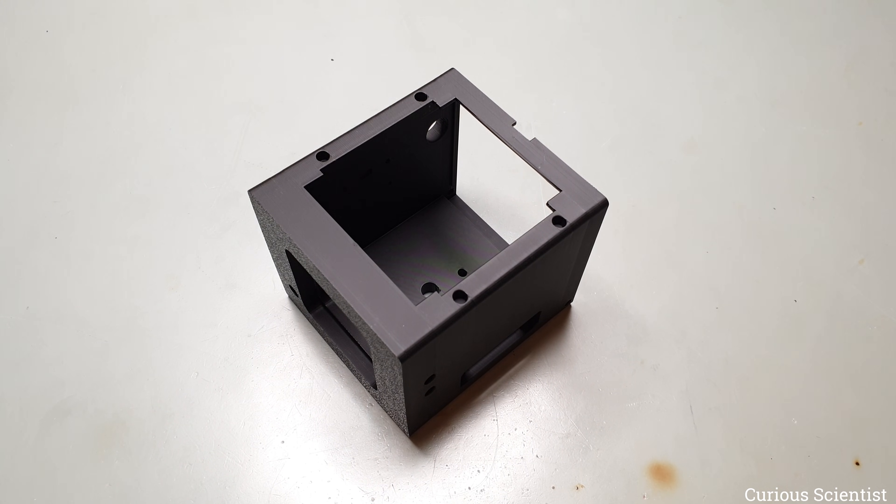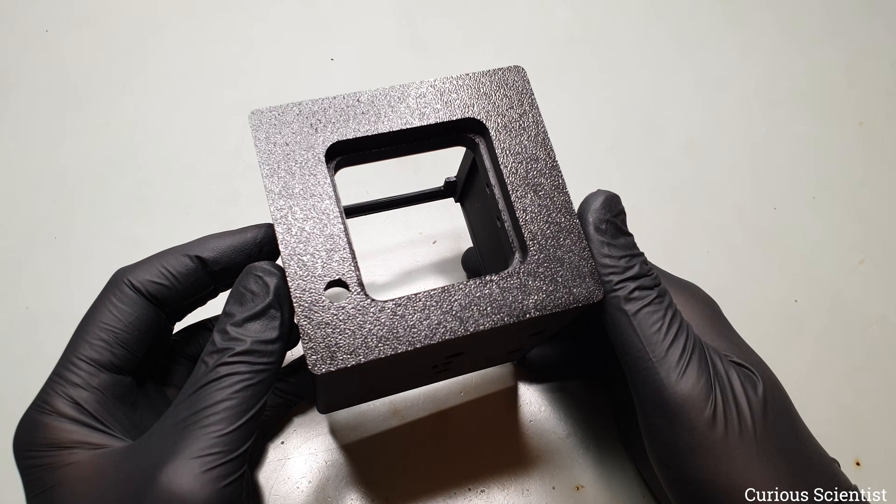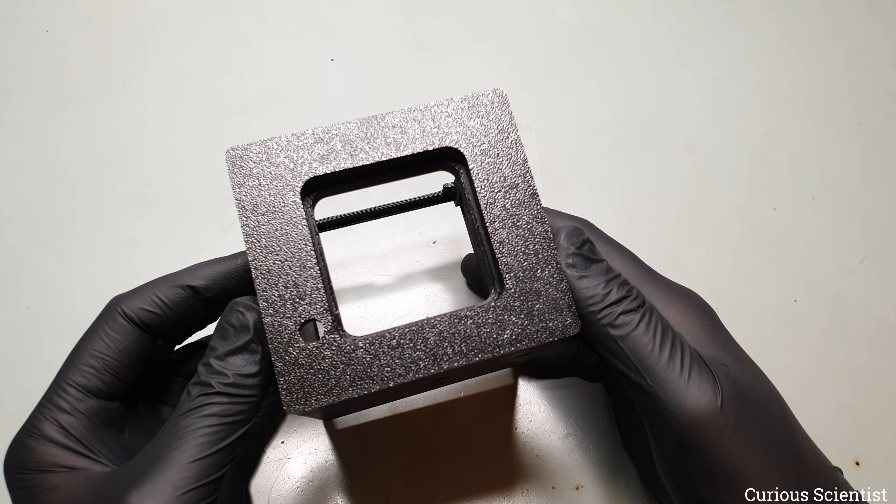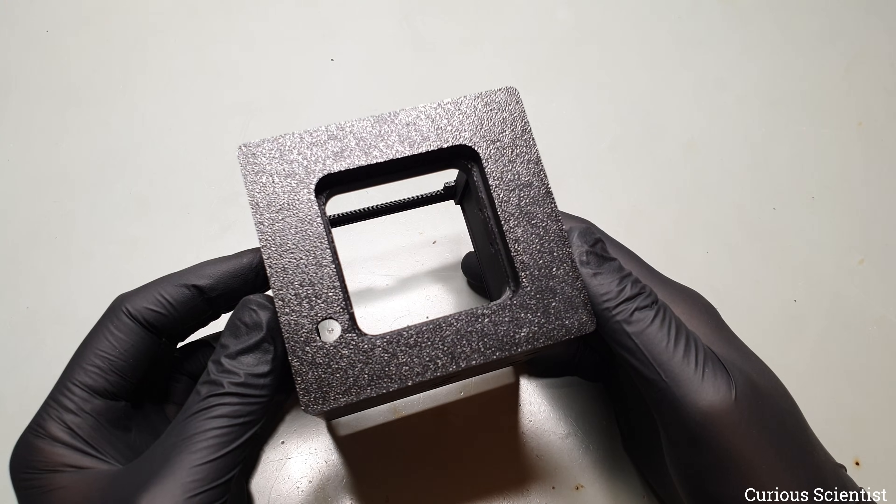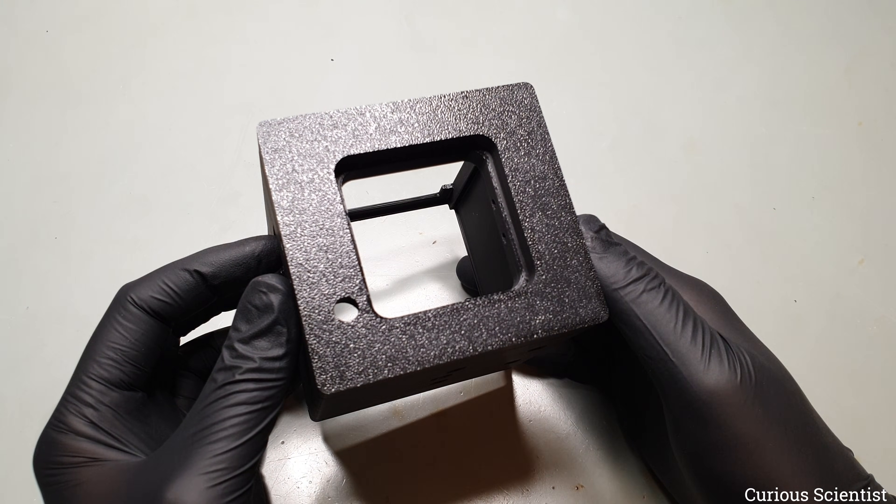The cutout on the top is made to accommodate the viewfinder and its mechanism. The four holes on the sides are for the brass insert nuts. As you can see from the pattern, the front side of the body was printed first. In the center, there is a recessed rectangular opening to firmly hold the C-mount flange, and on the side, there is a smaller hole for the shutter button.